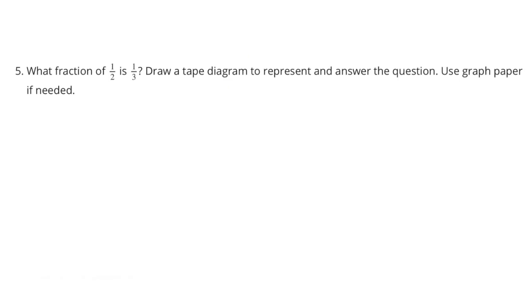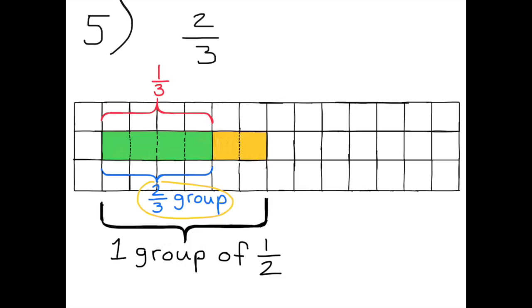Number five: what fraction of one-half is one-third? Draw a tape diagram to represent and answer the question; use graph paper if needed. On this graph paper I've colored in six squares — four of them green and two of them yellow. All six squares represent one-half. The four green squares represent one-third, and that one-third represents two-thirds of one-half. Four out of six simplifies to two-thirds.